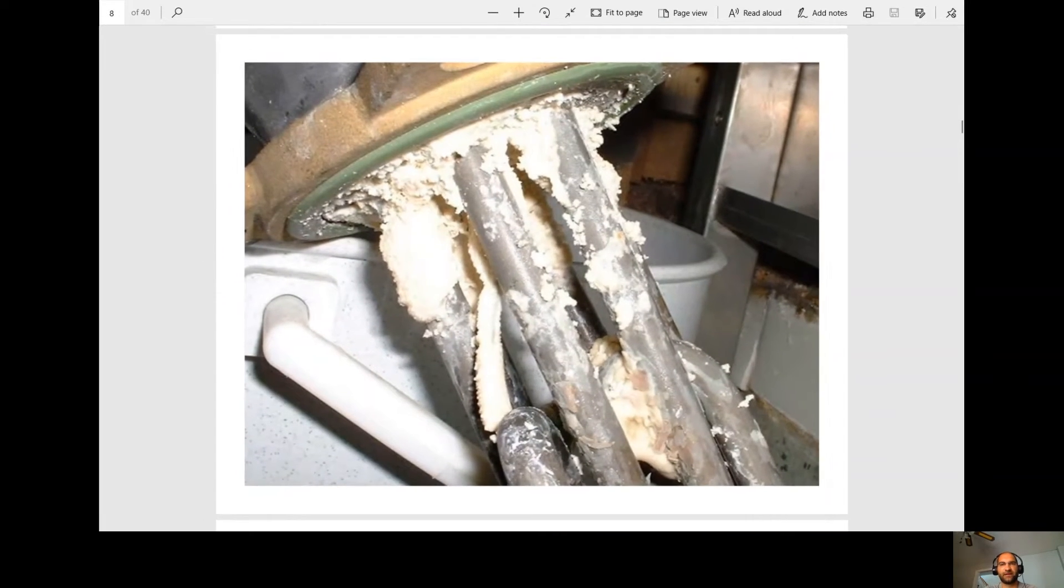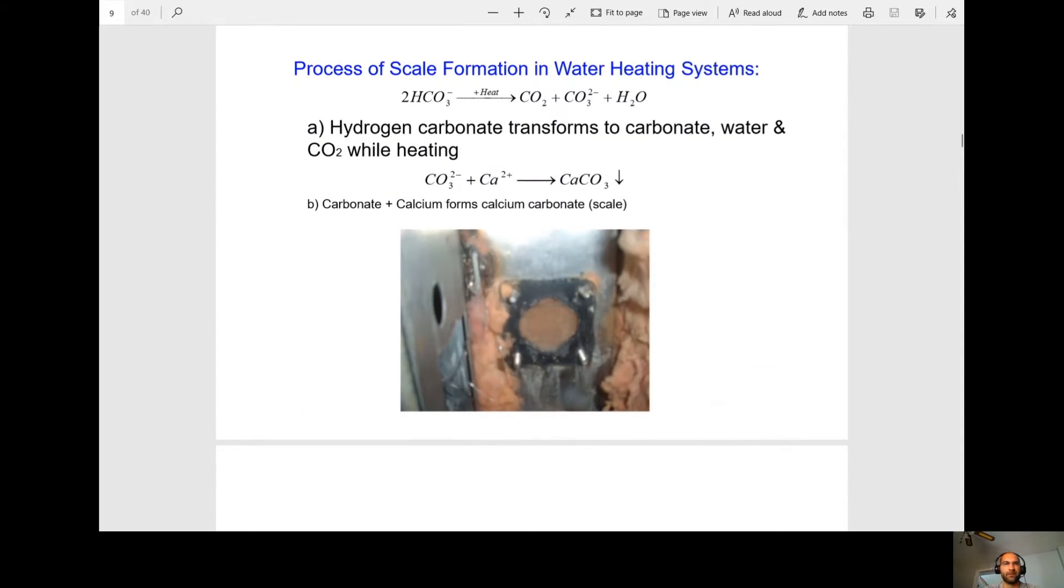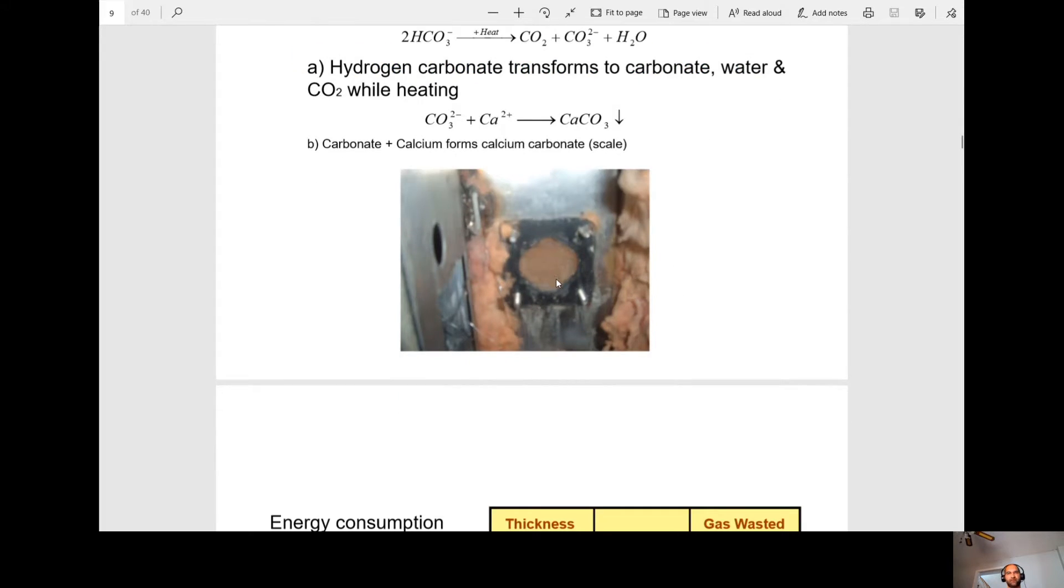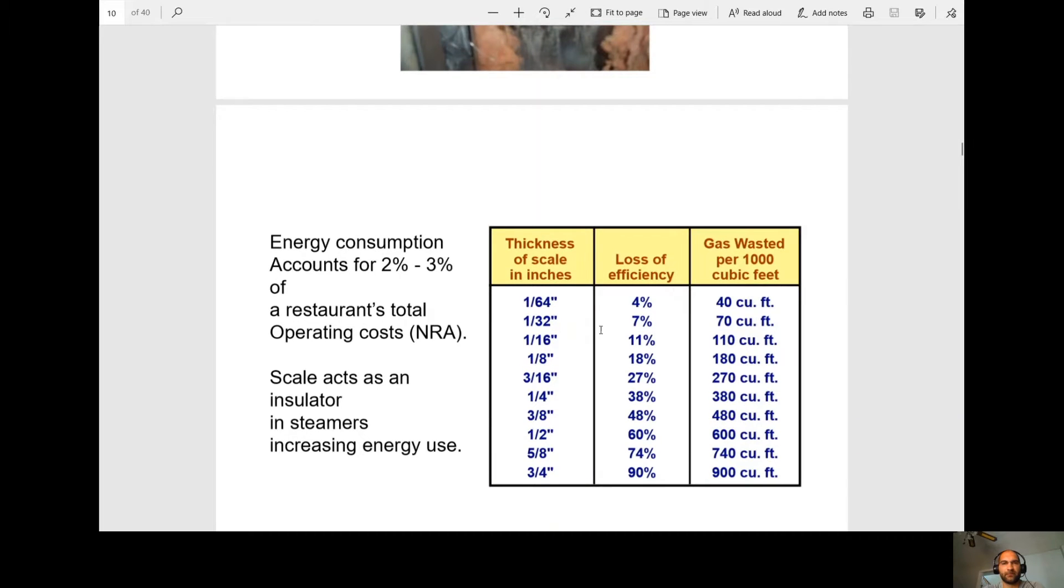Here's just an example of scale buildup. Basically what happens, how we build scale is hydrogen carbonate transforms to carbonate and water CO2 while it's heating. Carbonate plus calcium forms calcium carbonate, which is scale. As we can see, this one's really bad. We can't even see through here, through this access port, check our water level probes. This is probably through the secondary low water cutoff.